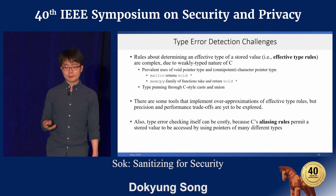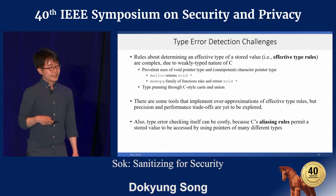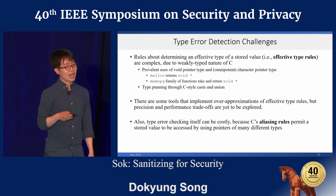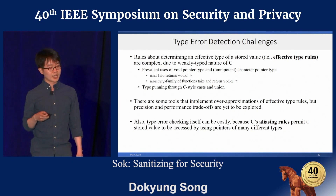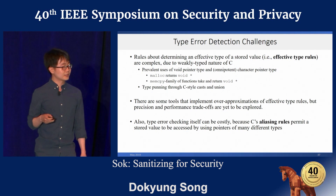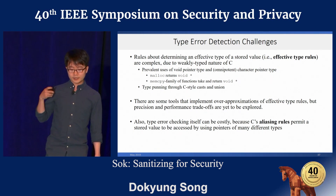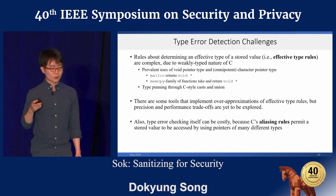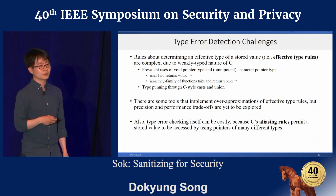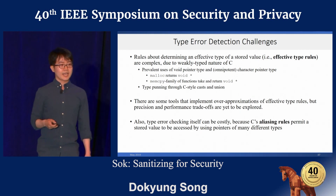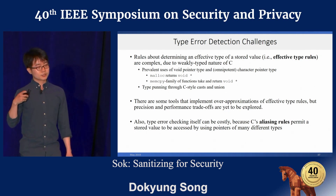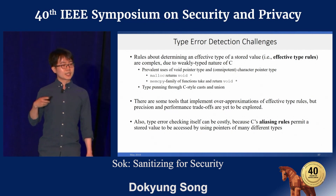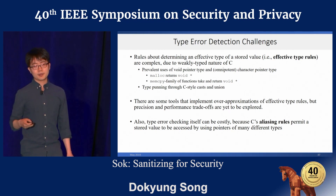Detecting type errors beyond bad casting vulnerability requires tracking the effective type of all memory objects. However, the effective type rules in C are complex, mainly because C is not a strongly typed language. It supports many constructs that support type punning, and there are standard library functions such as memcpy that work on byte-level data representation without knowing the high-level type. C's aliasing rules also make type error detection difficult, because a stored value can be read using pointers of different types — for example, reading a stored value using a pointer of a character type is always allowed.